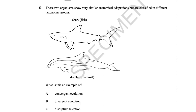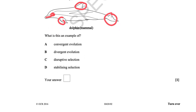Two organisms show very similar anatomical adaptations but are classified in different taxonomic groups. A shark and a dolphin both have eyes at the front, a mouth at the front, fins to steer, a tail to propel, and a dorsal fin — they are a similar shape. They are solving the same problems of swimming at speed through a fluid while finding prey. They are totally unrelated with a very distant common ancestor, and the reason they look similar is convergent evolution. The answer is A.